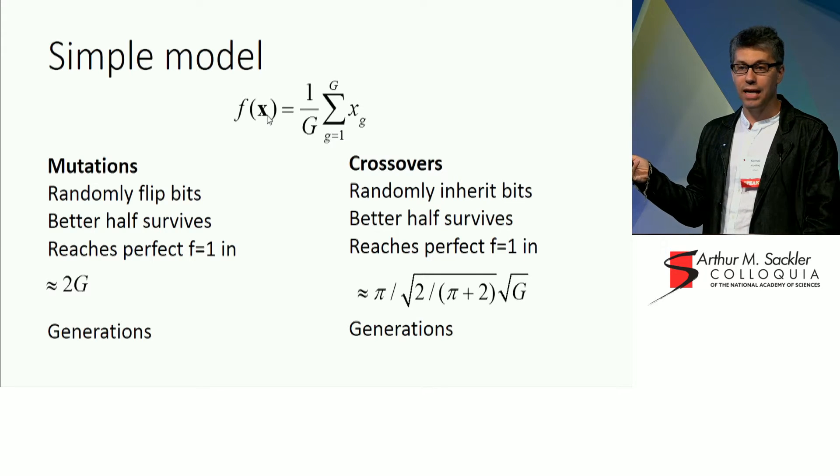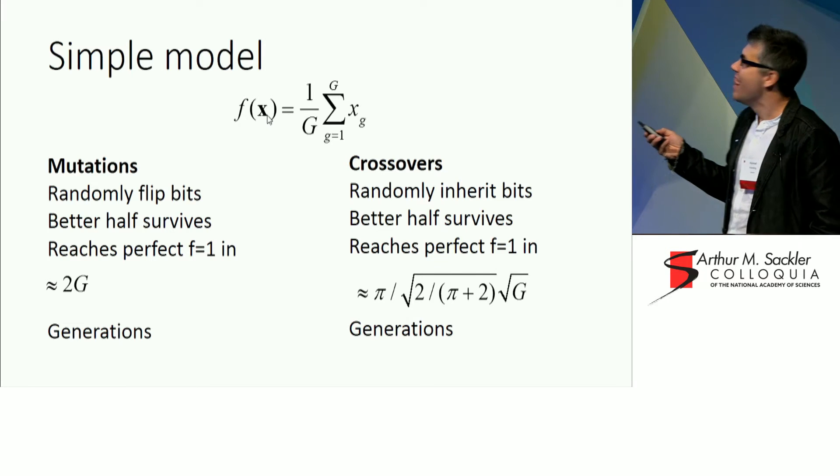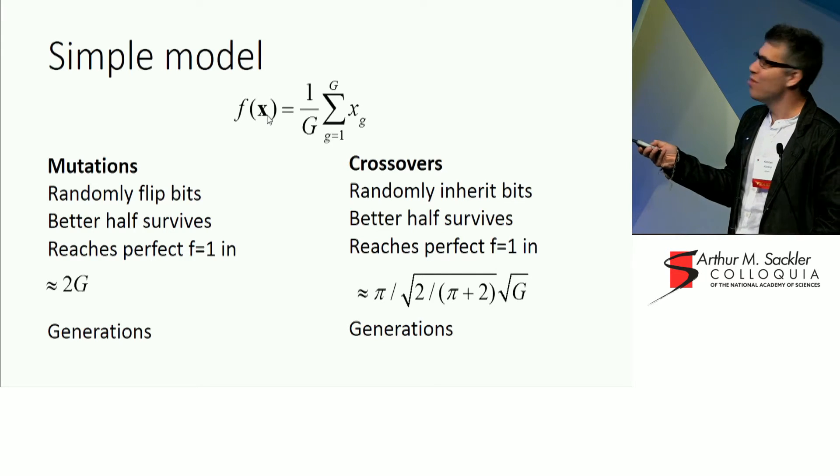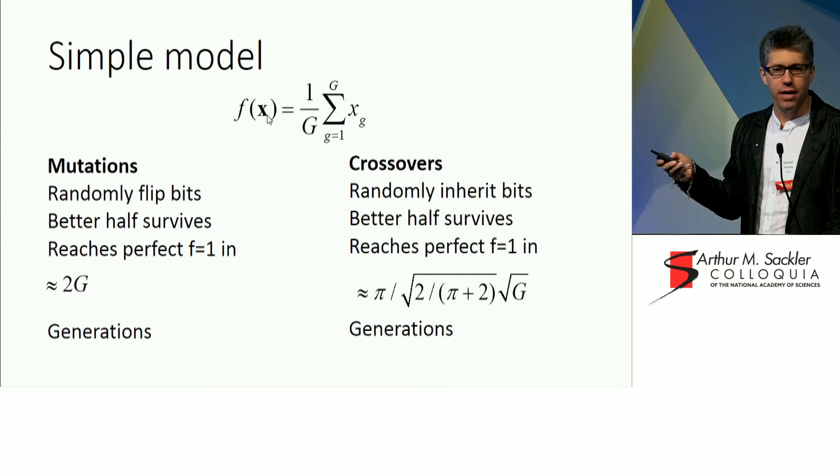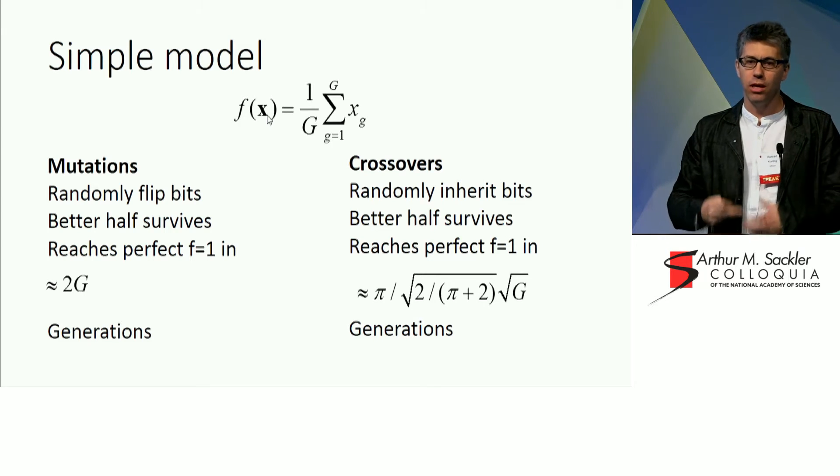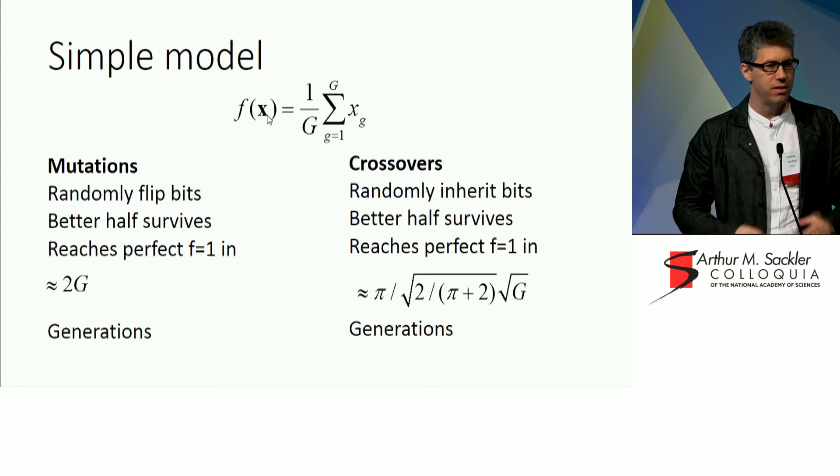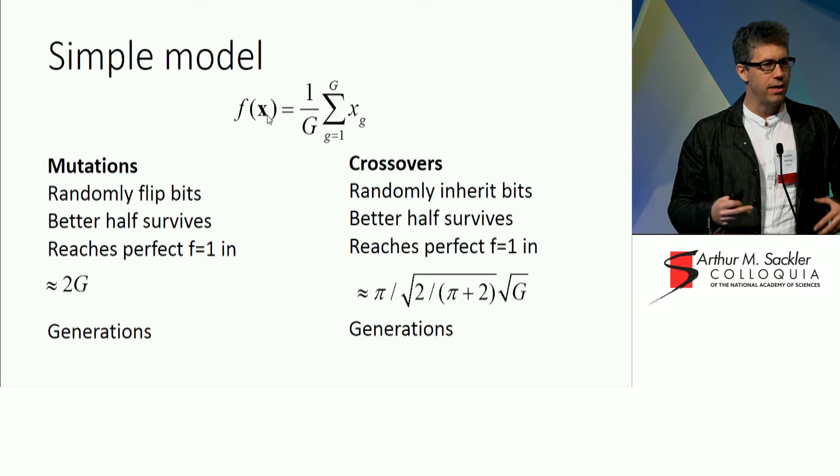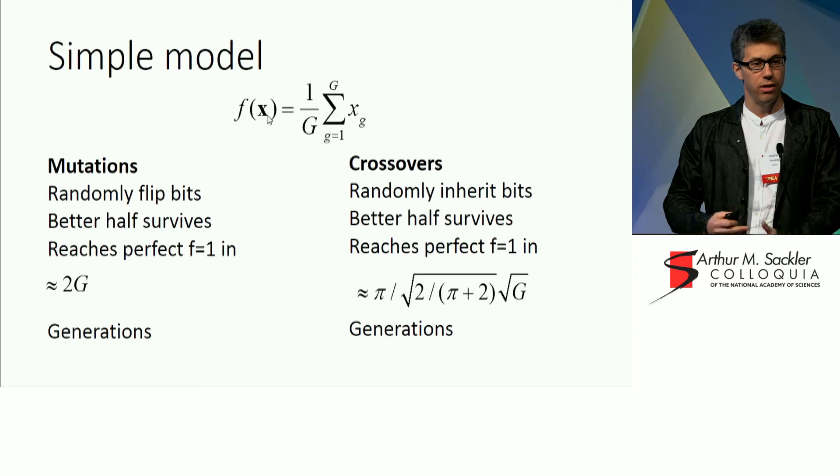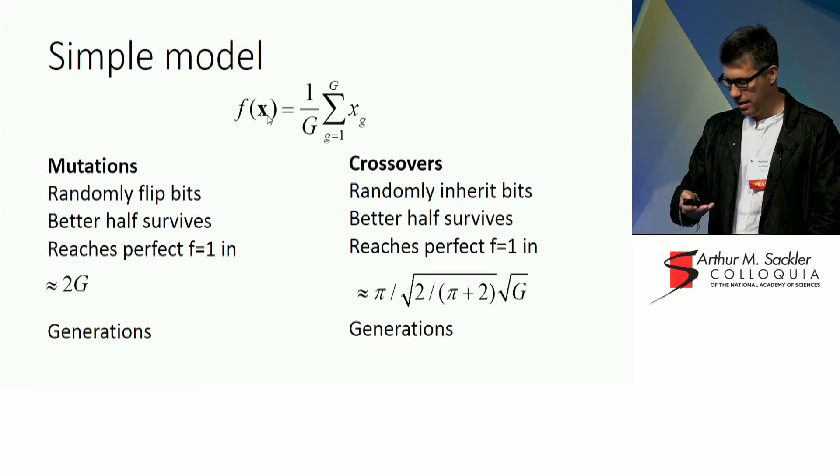But this assumes non-sexual reproduction. It's a very simple model. Let's make it slightly more complicated. And that's what David did in this book. And this is, it's a shame that in biology it's not discussed. I think it's one of the most beautiful findings in biology of all times. Let's say we have crossovers instead. So what we have is we have a large population. We start with an infinite-sized population in the beginning.